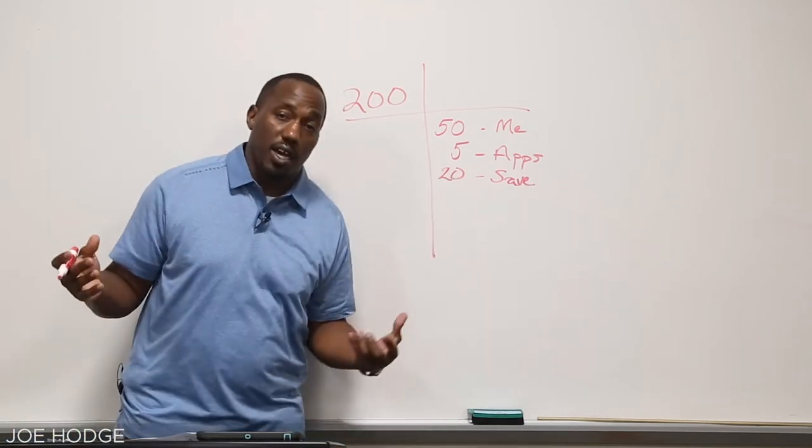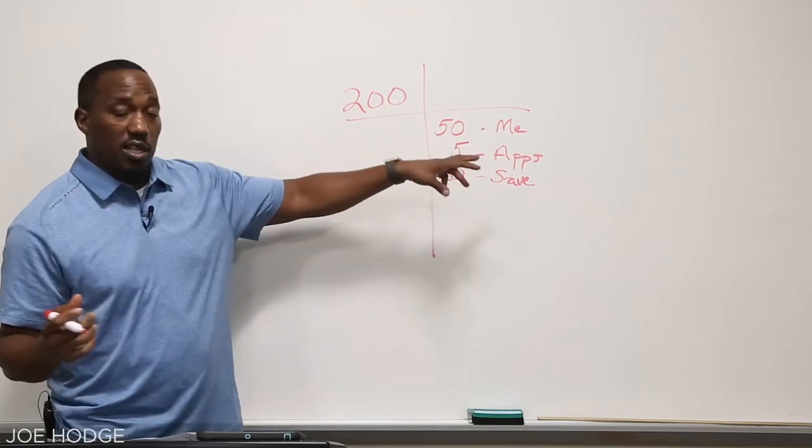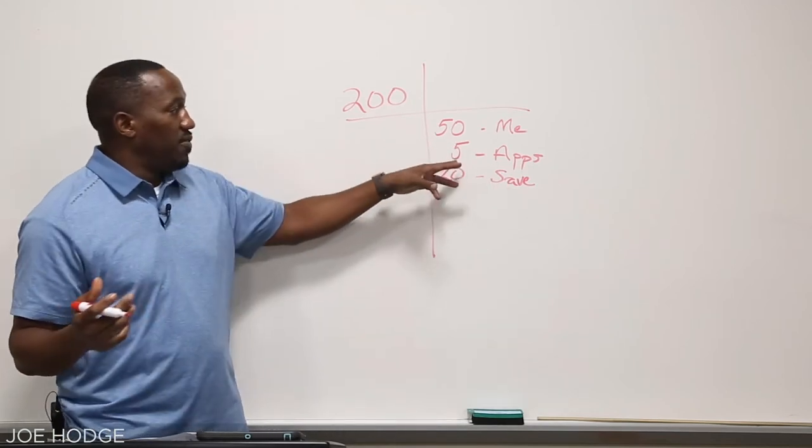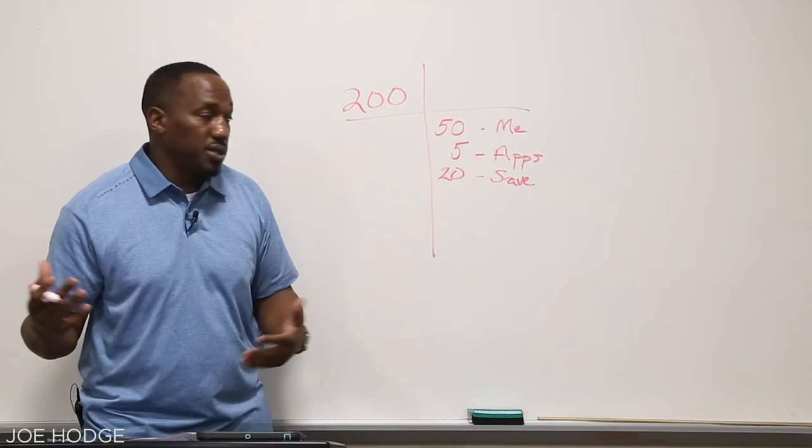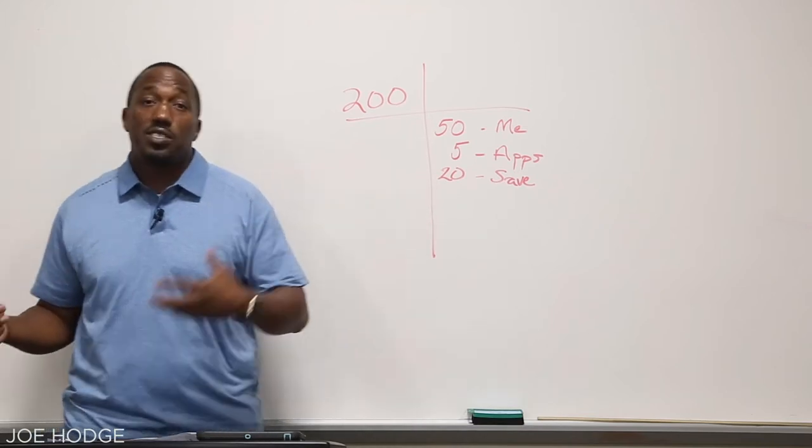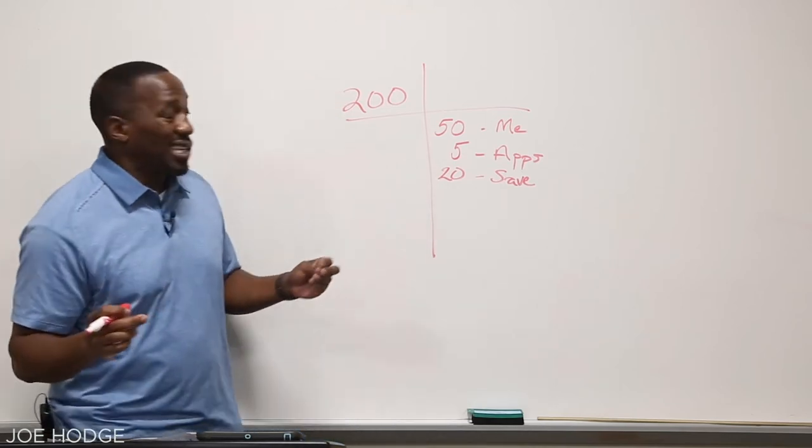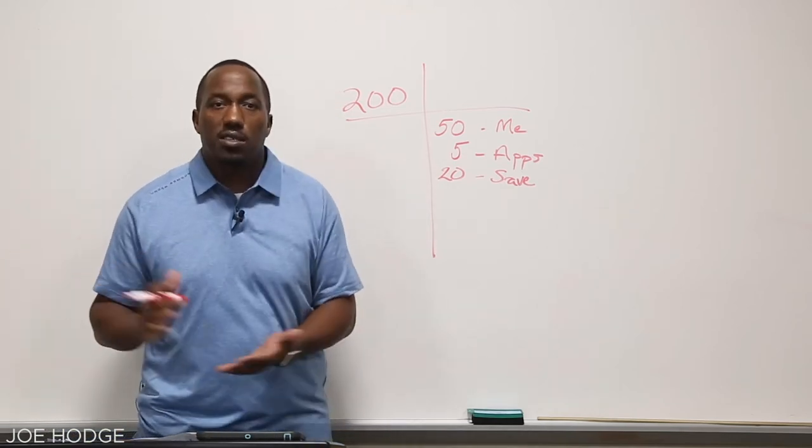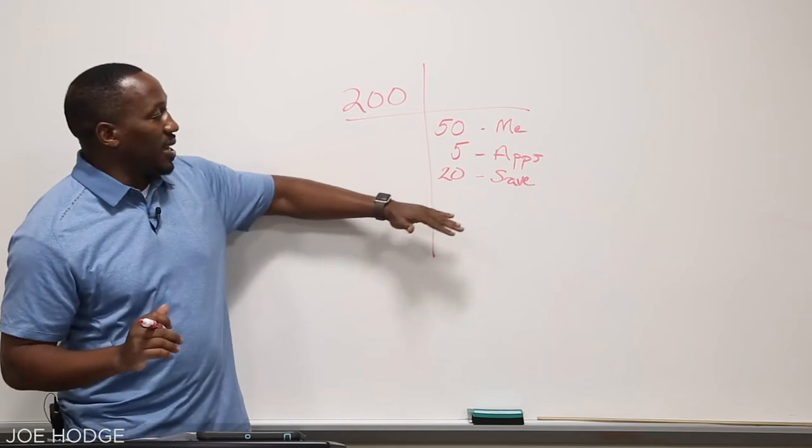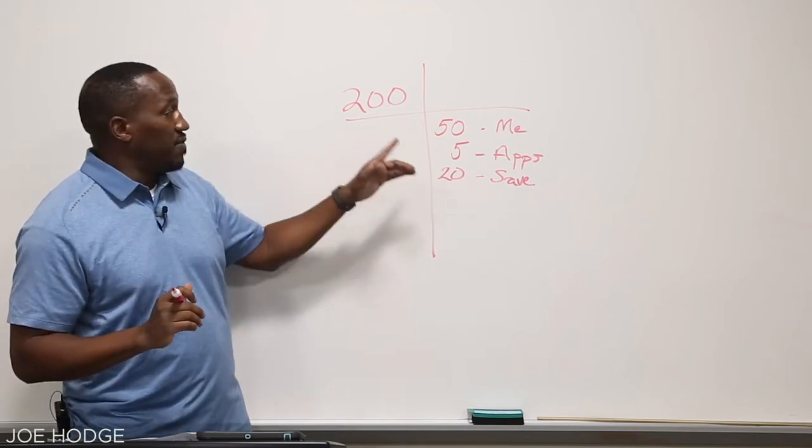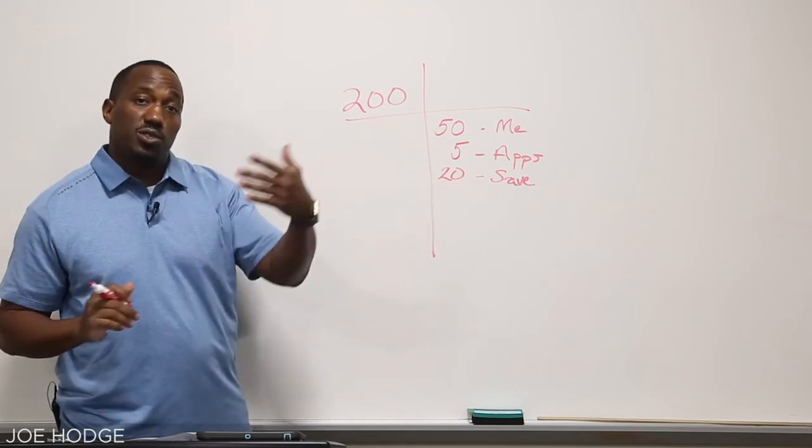So let's see how much of my money have I already spent. I spent $50 for me just for pocket money, $5 on my miscellaneous apps, and $20 to save. I have $75 of that $200 that I've already spent, which is going to leave me at about $125 left. So I need to account for every cent of this $200. So I have $125 more to go.